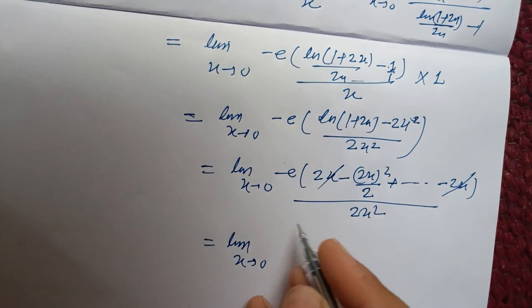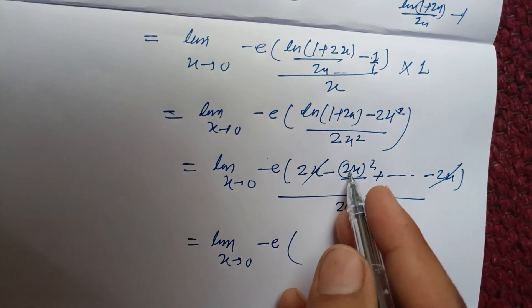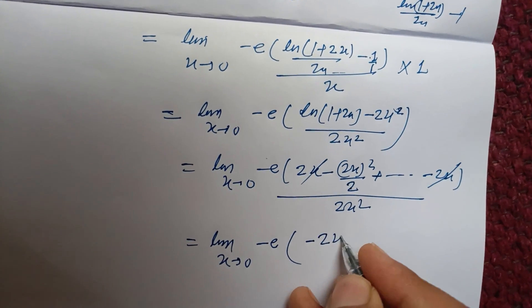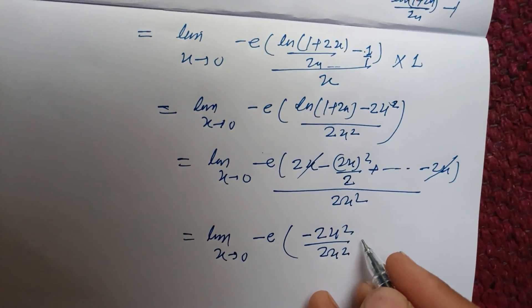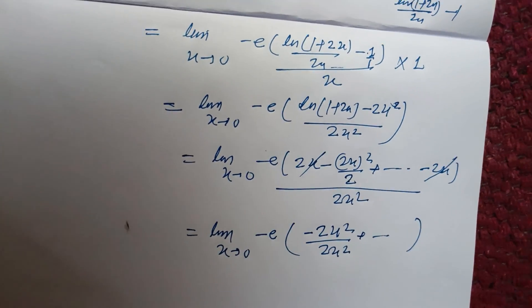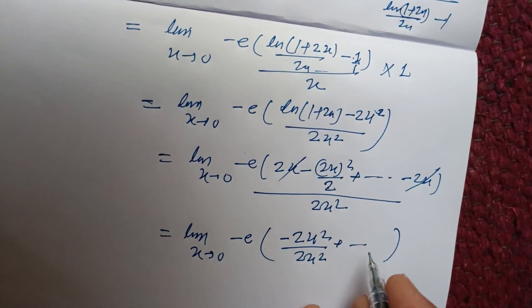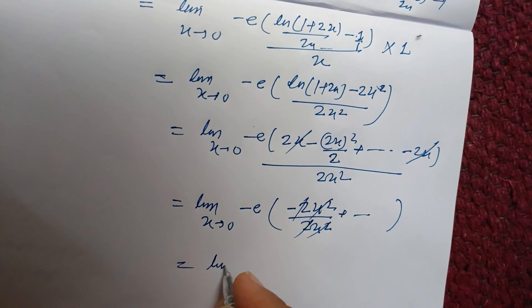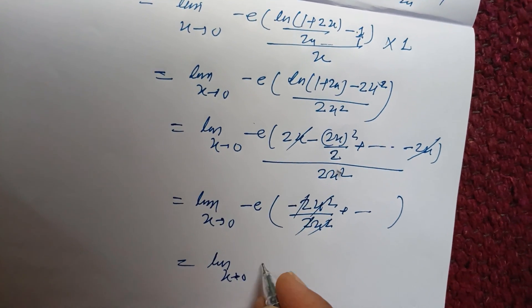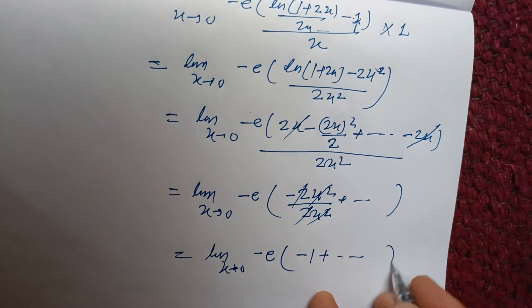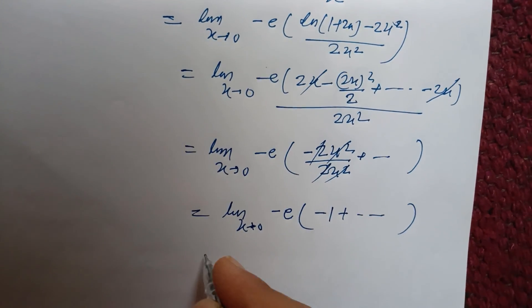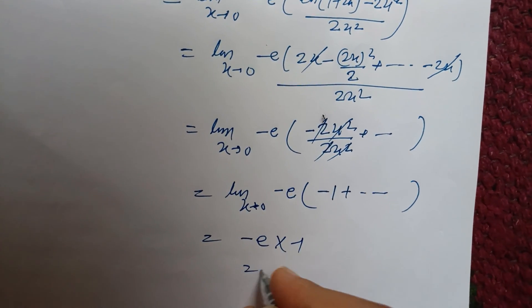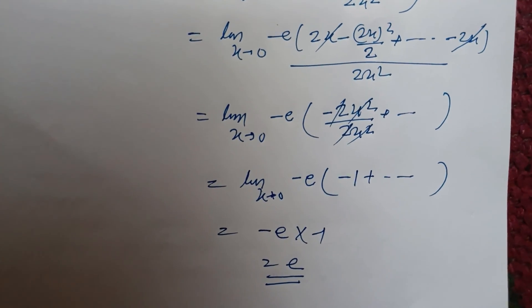So we get limit as x tends to 0 of minus e times (-4x²/2) / (2x²), which simplifies to minus e times (-1) plus higher order terms. All terms with x become 0 after applying the limit, giving minus e times minus 1, which equals e. So e is the correct answer.